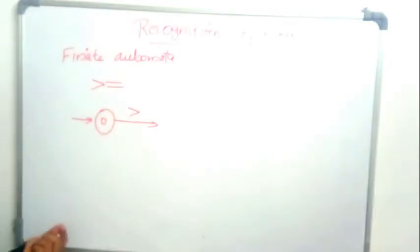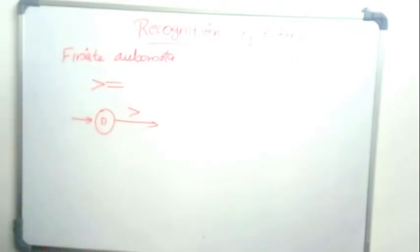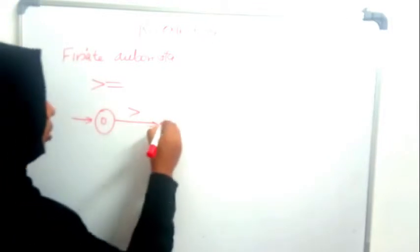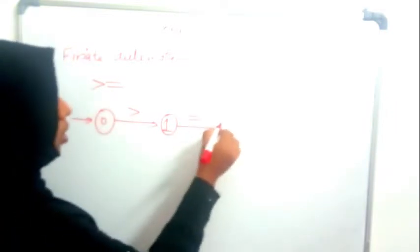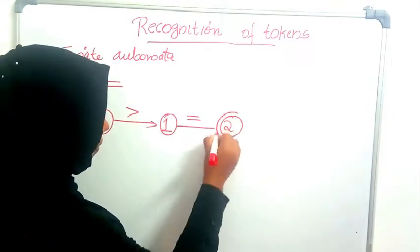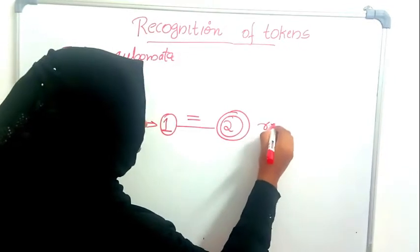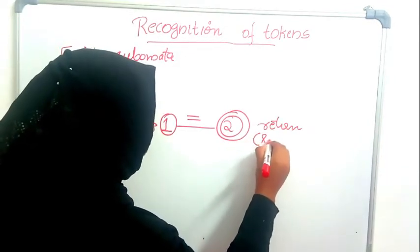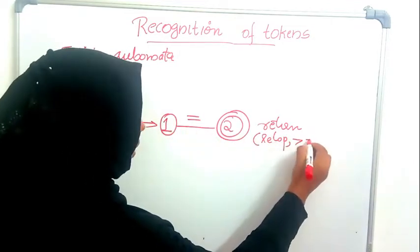As we have seen in input buffering, the lexical analyzer will read one more character to check whether the next character is an equal-to sign. If it is equal to, it can return 'greater than or equal to'; otherwise it will return simply 'greater than'. If the next character is equal-to, we move to the final state of the automaton, marked by double circles, and we return the token name relop with the value 'greater than or equal to'.